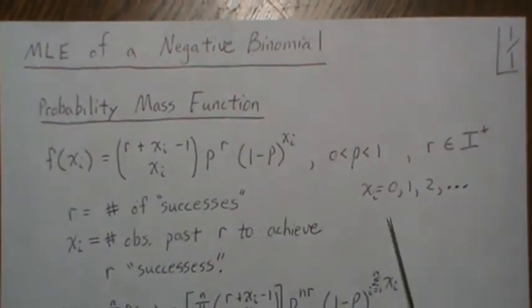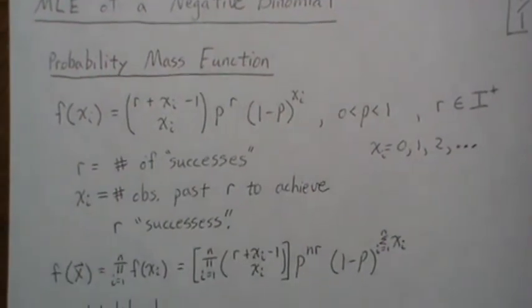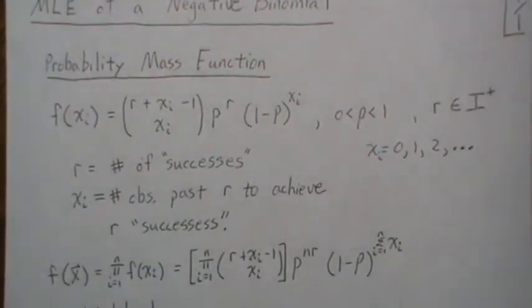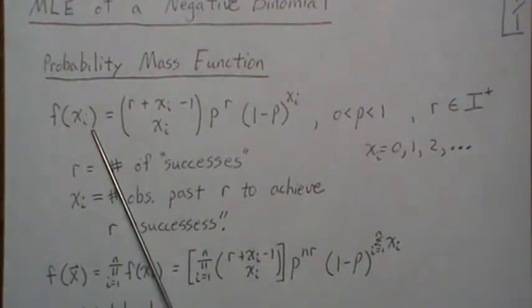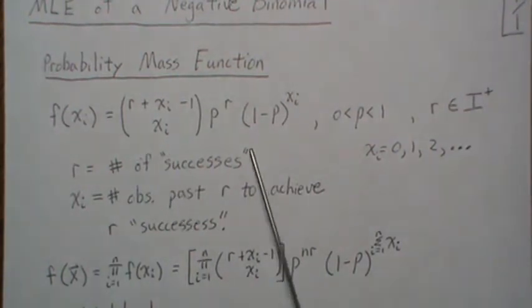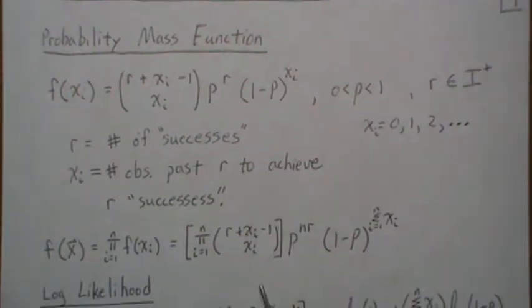So X goes from zero to infinity. Now the joint likelihood, this is for N X's, and so if we collect a sample of size N and they're all independent, then it's the product of these density, these probability mass functions.